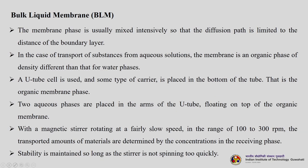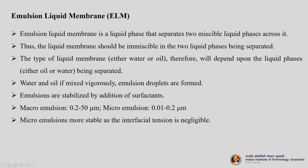In BLM, the membrane phase is usually mixed intensively so that the diffusion path is limited to the distance of the boundary layer. The membrane is an organic phase of density different from the water phases. A U-tube cell is used, some carrier is placed at the bottom as the organic membrane phase, and two aqueous phases are placed in the arms floating on top, with a magnetic stirrer rotating at 100 to 300 rpm. Stability is maintained as long as the stirrer is not spinning too quickly, otherwise the liquid membrane will break. BLM has no commercial applications — it is used at lab scale to generate data and characterize a liquid membrane.